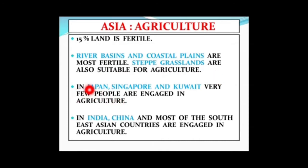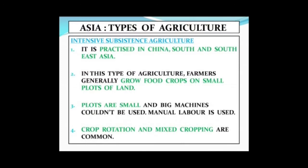In countries like Japan, Singapore and Kuwait, very few people are involved in agriculture, whereas countries like India, China and most of the Southeast Asian countries are engaged in agriculture. The types of agriculture practiced in Asia are intensive subsistence agriculture, extensive commercial agriculture, and also plantation and shifting agriculture.